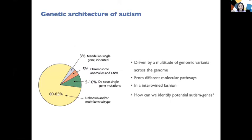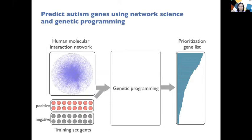In our project, we use network science and genetic programming. The reason we use network science is that, instead of looking at one gene at a time or individual genetic effects, we hypothesize that human genetics is complex and genes interact in a complex fashion. If we can look at how genes interact with each other, maybe we can find potential autism-associated genes using knowledge of known autism genes.